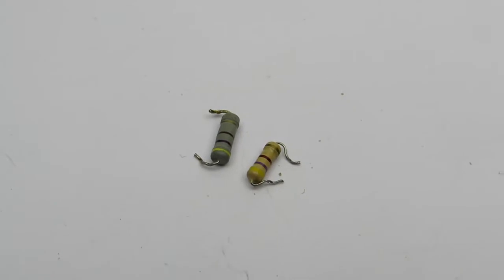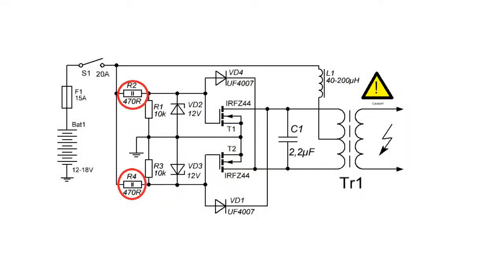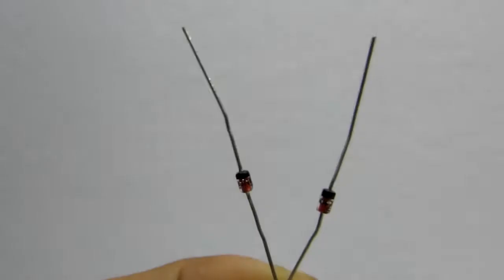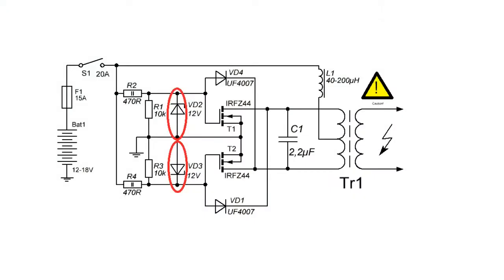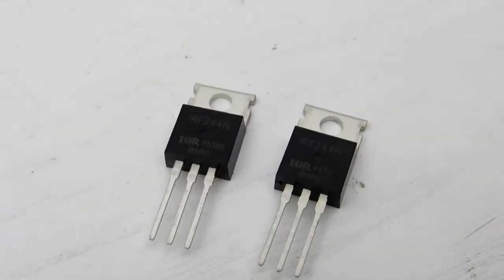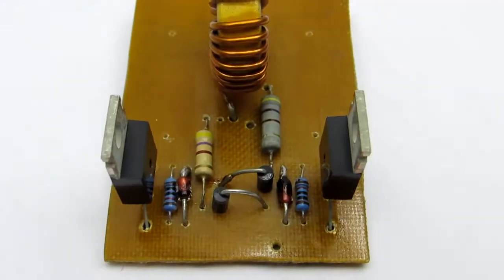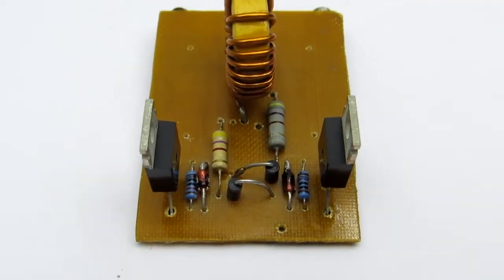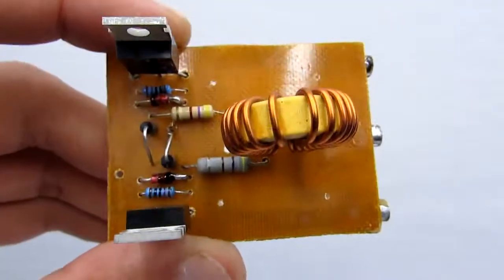Gate resistors have two functions. They simultaneously limit the gate current and the current of the Zener diodes. The Zener prevents voltage increase through gate and protects FET from breakdown. They maintain a stable operating voltage. Although experience shows that when powered from a stable source of 20V, no need for Zener.